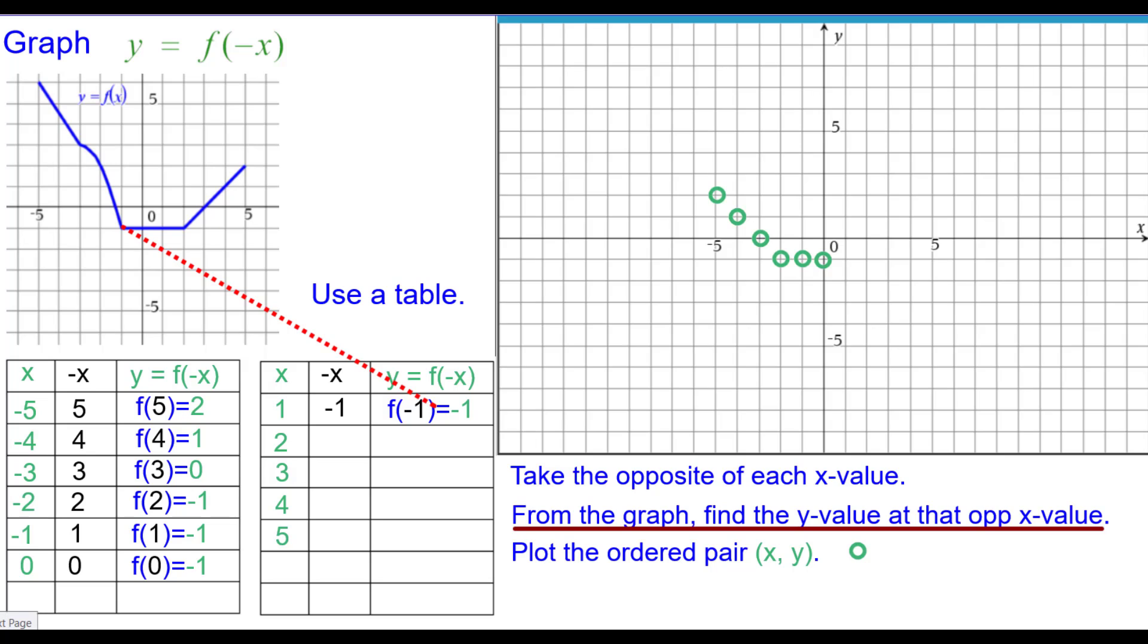And when x is positive 1, the opposite of x is negative 1. f at negative 1 is negative 1, so 1 comma negative 1. 2's opposite is negative 2. f at negative 2 is up there at positive 2, so 2 comma 2.